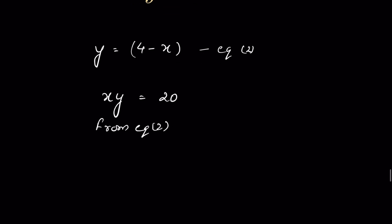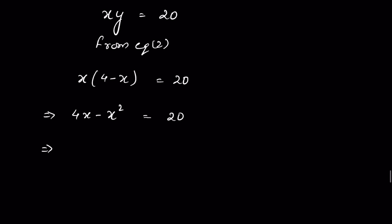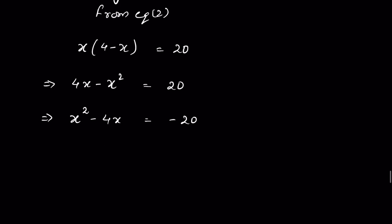Given x times y equals 20, we substitute the value of y from equation 2, so it becomes x times (4 minus x) equals 20, or 4x minus x squared equals 20. Multiplying minus to both sides gives x squared minus 4x equals minus 20.